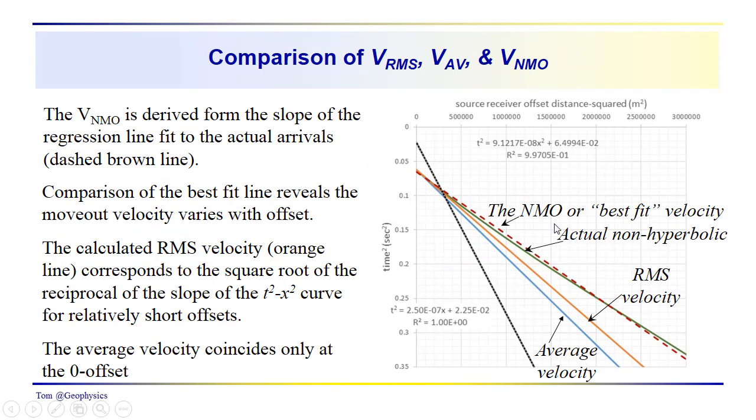So, again, the VNMO is derived from the slope of the regression line, and I think you can see that this best fit line, depending on the range of offsets that we have, we're going to get different NMO velocity. So if we only had a shorter range of offsets here, our best fit line would come down a little steeper. The NMO velocity then would be less than the NMO velocity that we get for this full range of offsets.